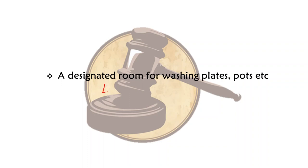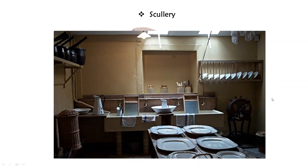Next we have: a designated room for washing plates, pots, etc. — mostly attached to the kitchen. The answer is scullery, S-C-U-L-L-E-R-Y. Scullery is the sort of room where all pots and dishes are washed.